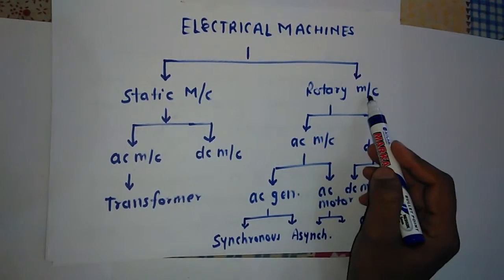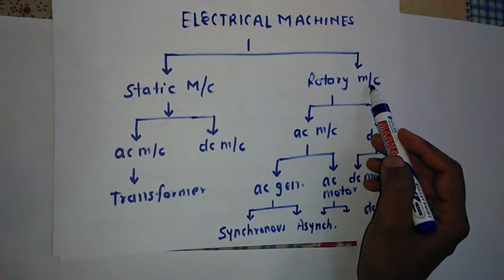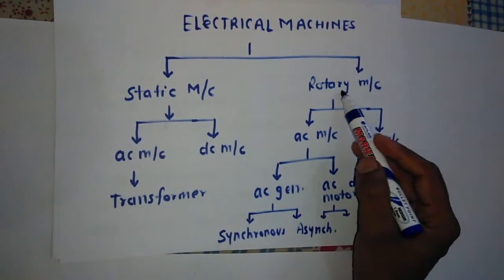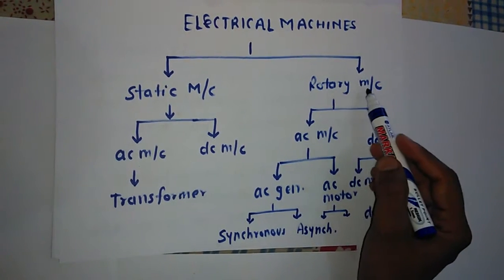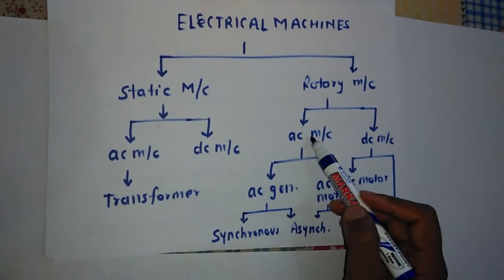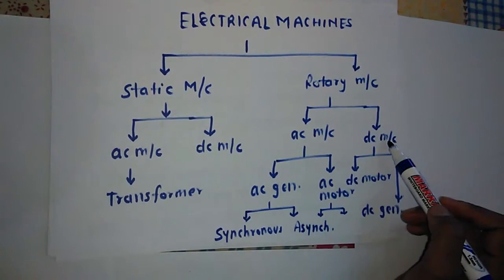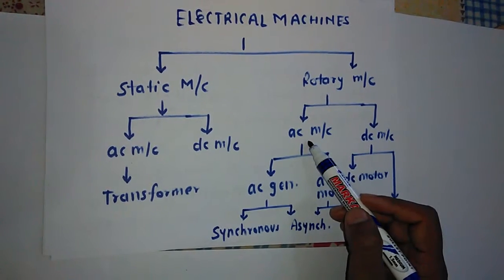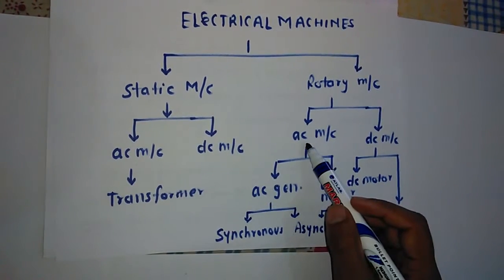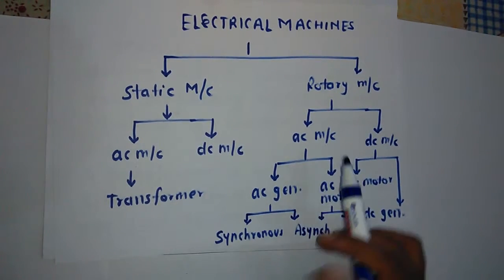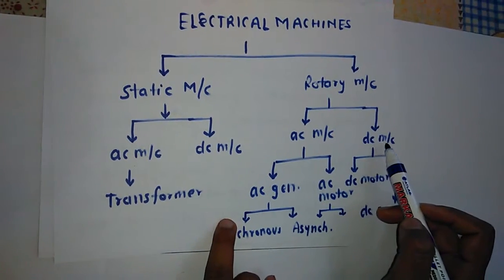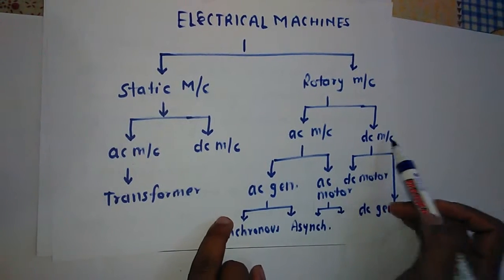Rotary machines are those machines which have revolving parts — that is, rotation of the armature — and one fixed part. Rotary machines also have two parts: AC machines and DC machines. AC machines are those supplied by AC supply and DC machines are those supplied by DC supply.